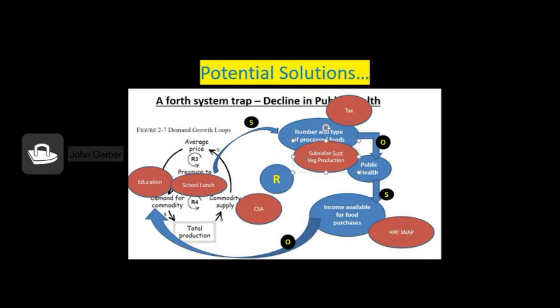Starting at the top and moving around clockwise, you can tax processed foods, increasing their costs and reducing consumption of processed foods. You might subsidize sustainable food production, subsidize local farms and organic farms, helping them become more competitive. You might make local foods more available for food producers by doubling their SNAP benefits if they buy at a local farmers market, something that Massachusetts actually does.